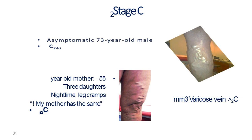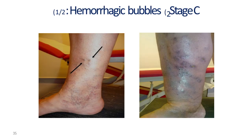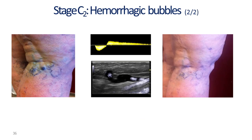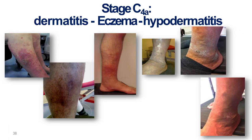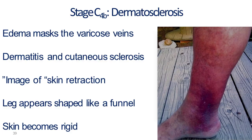Ladies are more commonly affected, especially after pregnancies or multiple pregnancies, and of course if they are overweight. Sometimes they complain of what we call a bleb, and sometimes they present with bleeding episodes from minor trauma. There is often edema as well. The worst cases involve eczema or ulcer development. In the most phlebitic or worst stages, there is edema which might mask the varicosities. There is also dermatitis, sclerosis of the skin, stretching of the skin, and legs may appear funnel-shaped because of the stretching. The skin becomes rigid.